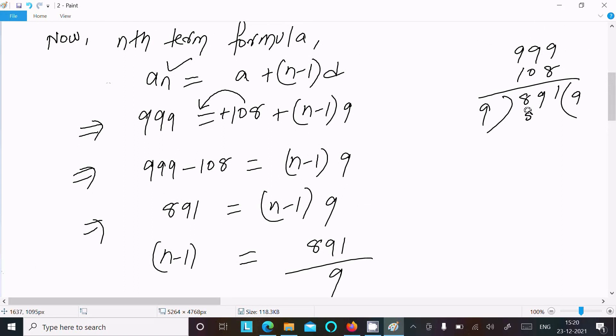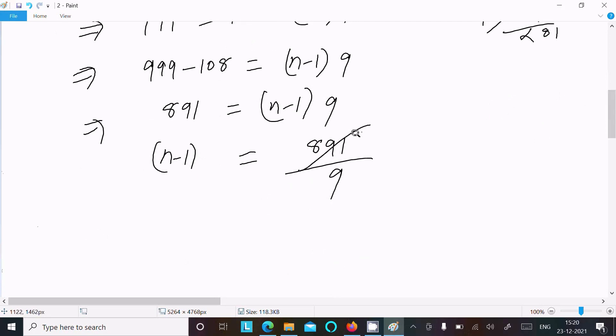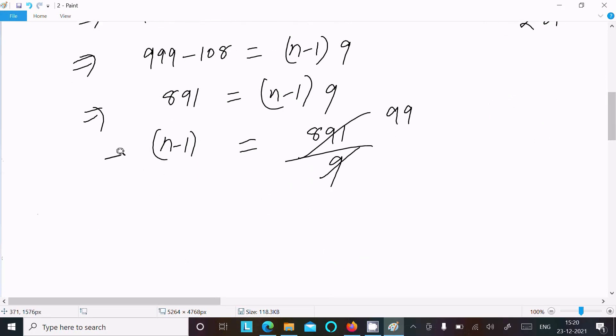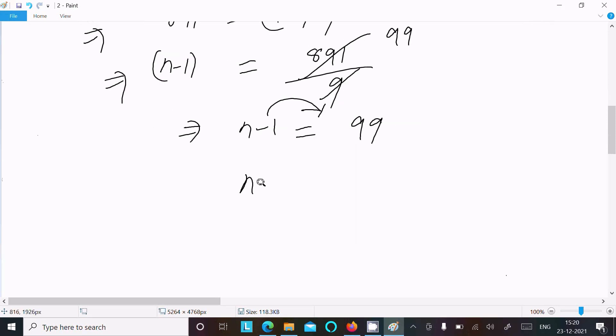So n minus 1 equals 99. Move 1 to the right side, so n equals 99 plus 1.